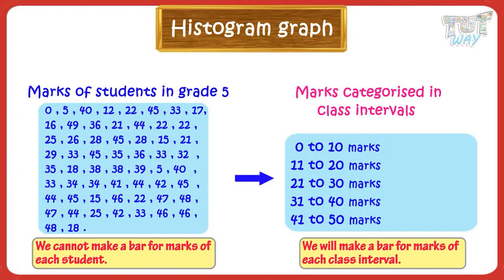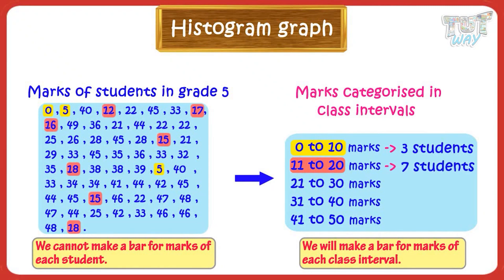Now let's answer a few questions. How many students are there in the range of 0 to 10 marks? There are 3 students in the range of 0 to 10. Similarly, count how many students have got marks in the range of 11 to 20 — there are 7 students. Similarly, count for all categories.